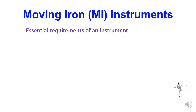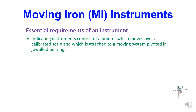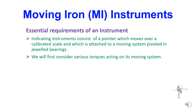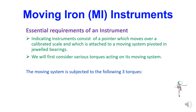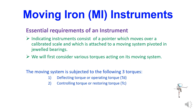Before going to the construction of moving iron instruments, you should know some essential requirements of any instruments. Any indicating instrument will have a pointer which moves over a calibrated scale and which is attached to the moving system. We will consider the various torques acting on its moving system. Basically, it has three types of torque: deflecting torque (or operating torque), controlling torque (or restoring torque), and damping torque.